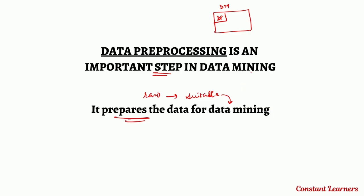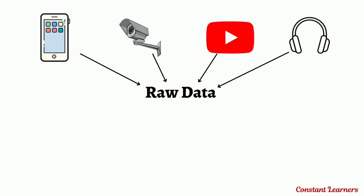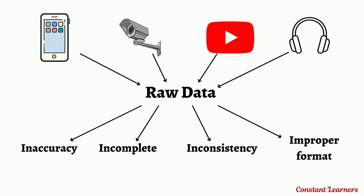When we collect data from multiple sources, it is in raw format. This data has inaccuracy, incompleteness, inconsistency, and is in an improper format. Data pre-processing cleans this data, completes it, and transforms it into a proper format — removing all of these flaws and making the data suitable for data mining.